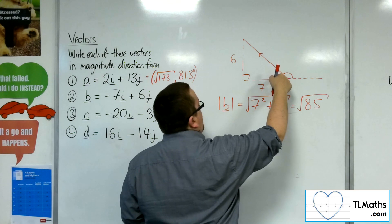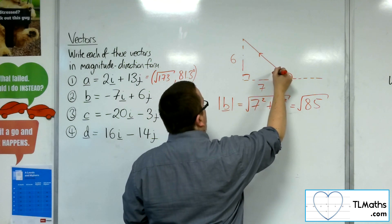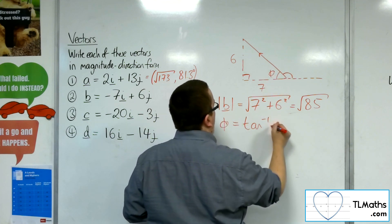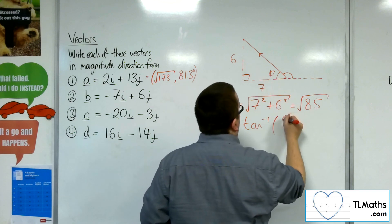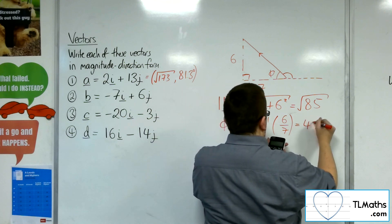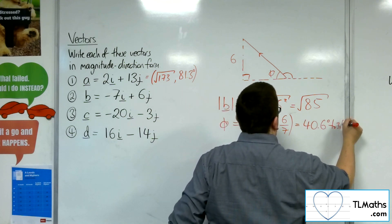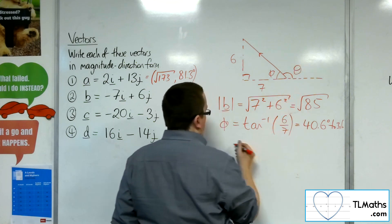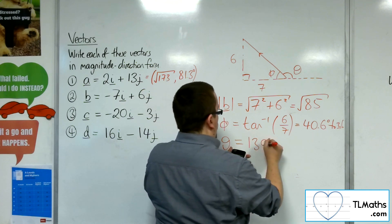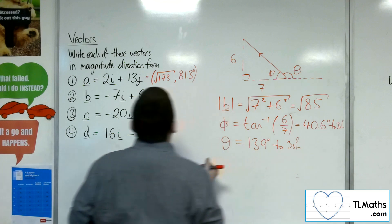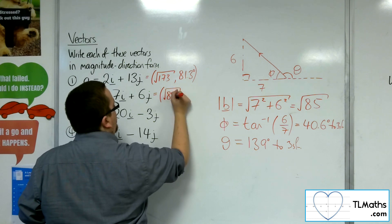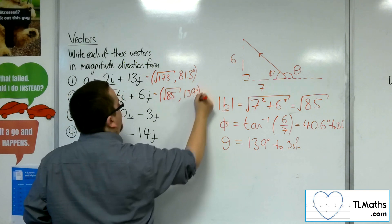And this angle, so if I call that phi. So phi is the inverse tan of opposite over adjacent, so 6 over 7. So inverse tan of 6 over 7, so 40.6 degrees to 3 sig fig. So theta, the angle I want, is 180 take away that, which is 139 degrees to 3 sig fig. So as long as it is clear on your diagram as to which angle you're considering, we've got root 85 as the magnitude and 139 degrees as the angle.